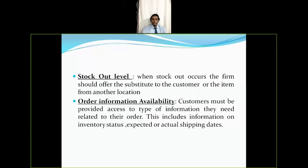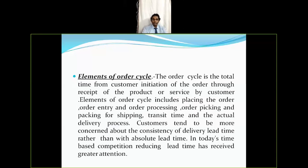The next transaction element is order information availability. Customers must be provided access to the type of information they need related to their order, including inventory status and expected or actual shipping dates. Once a customer places an order, they expect to be provided with enough information about their order — such as what was ordered and when it will be delivered.